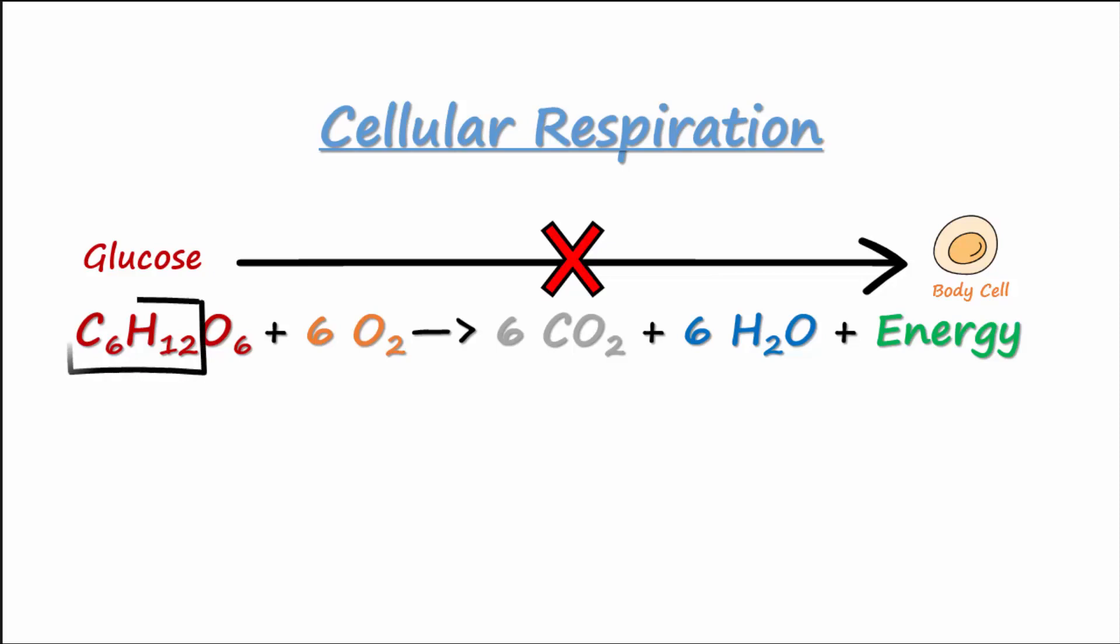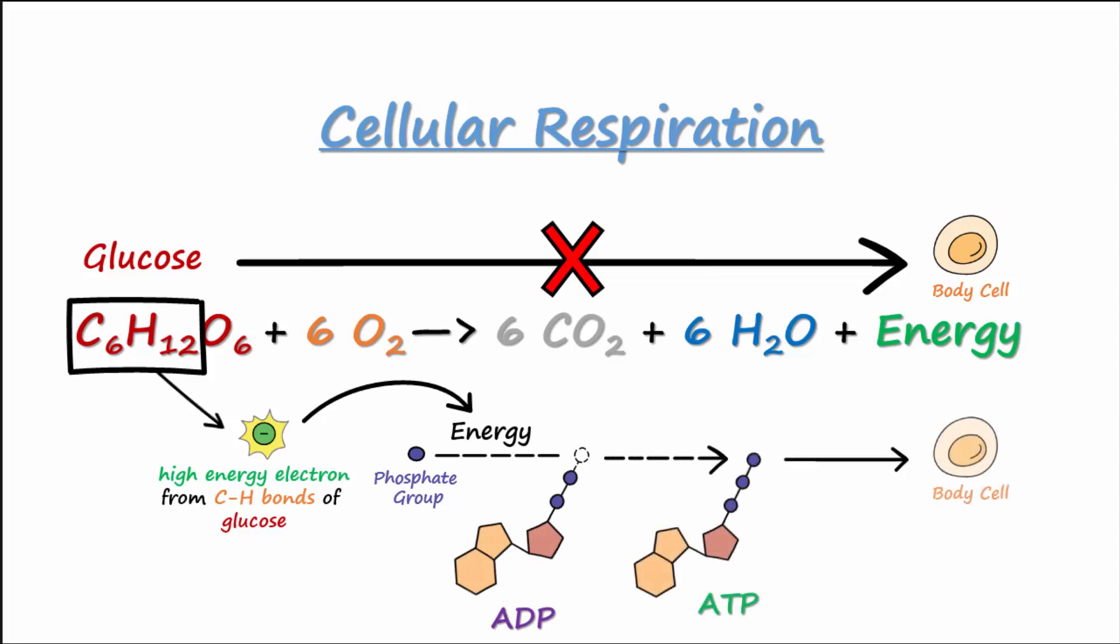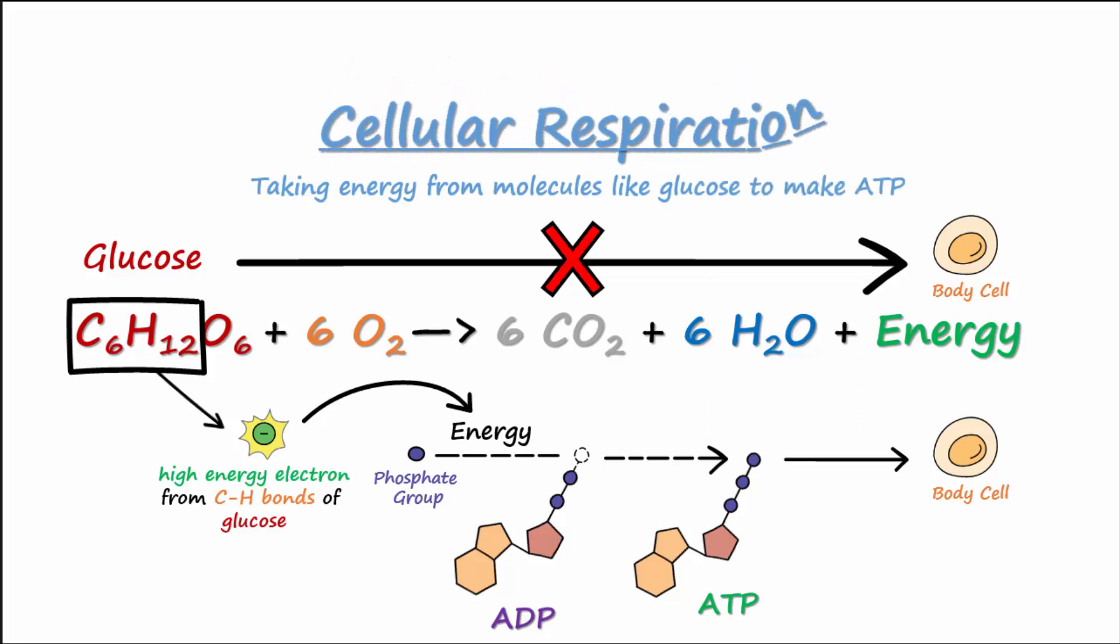Our body cells can't use glucose directly for energy. The high energy electrons in the carbon-hydrogen bonds of glucose provide the energy needed to add a phosphate onto ADP to produce ATP for our body cells. In other words, our cells can't use glucose directly for cellular processes. They use the energy from glucose and convert it into ATP. The process of taking the energy from molecules like glucose, fatty acids, and amino acids and using it to make ATP is known as cellular respiration.